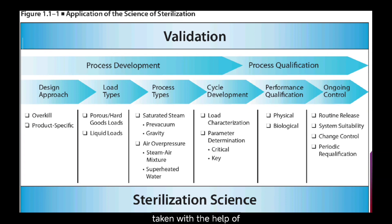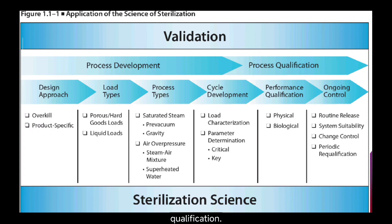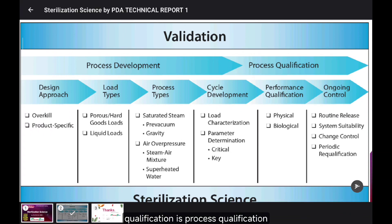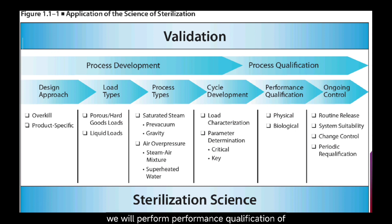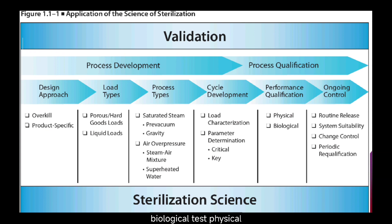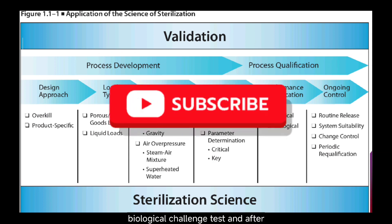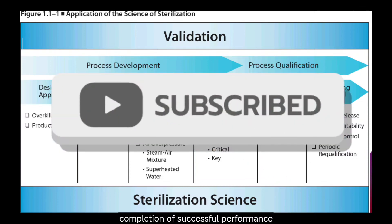After cycle development, final performance qualification runs are taken with the help of physical or external thermocouples and biological indicators. The second phase is process qualification, in which we perform performance qualification of the developed cycle and load. Performance qualification involves physical and biological tests — physical includes thermocouples and temperature mapping studies, along with biological challenge tests.